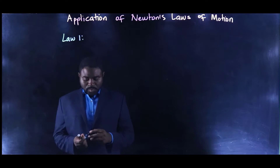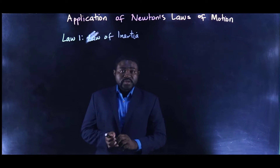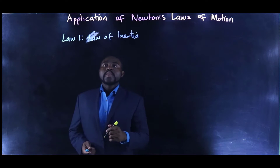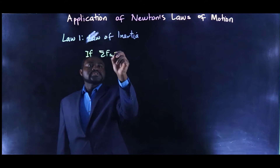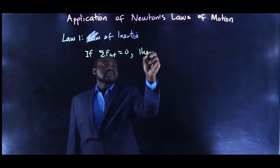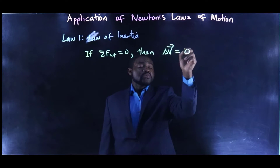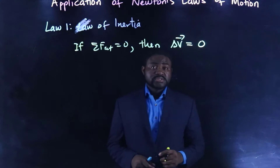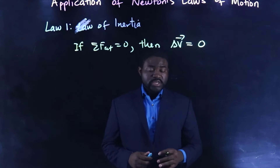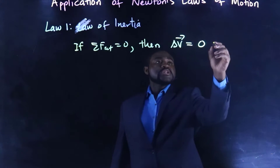Law one, which is called the Law of Inertia, basically says that if no net external force acts on an object, then the velocity of the object remains constant. In other words, the velocity of an object remains constant if no net external force acts on that system. This means that acceleration is also equal to zero.